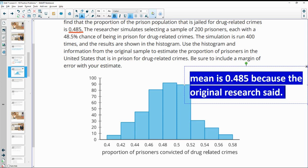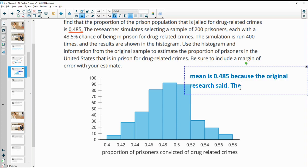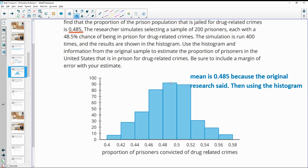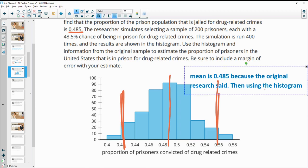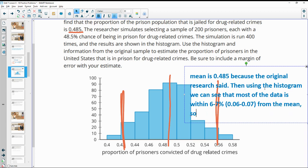So we could say that the mean is 0.485 because that's what the original researchers said. Then if you look at the histogram, and let me make this smaller so I can fit it on here, and using the histogram, we can see kind of where all the data is falling. So if we look, you have about the mean right here, the middle of it. So then you look for where most of the data is falling is kind of within here, within the margin of error. And that looks to be about like six to seven percent from the mean or 0.06 to 0.07. So using the histogram, we can see that most of the data is within six to seven percent, which is 0.06 to 0.07 from the mean.